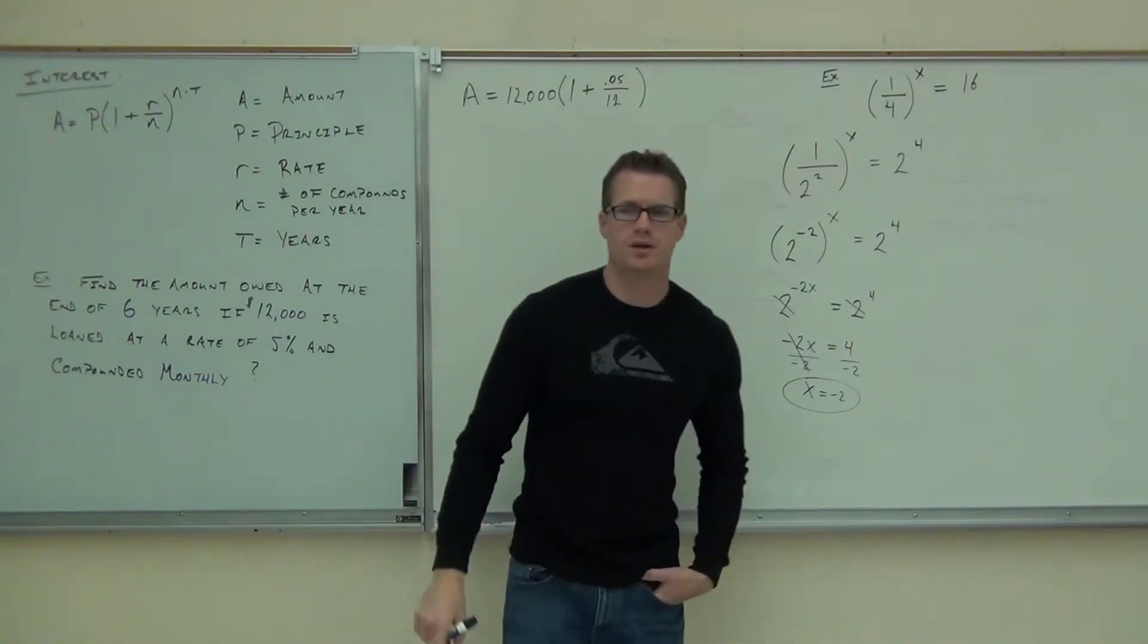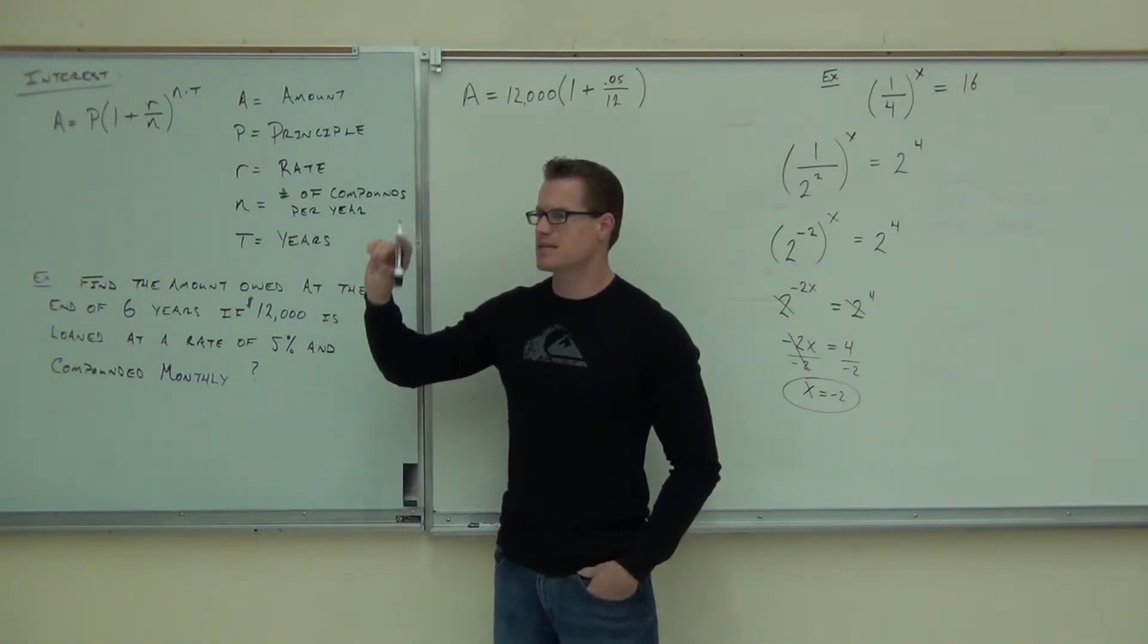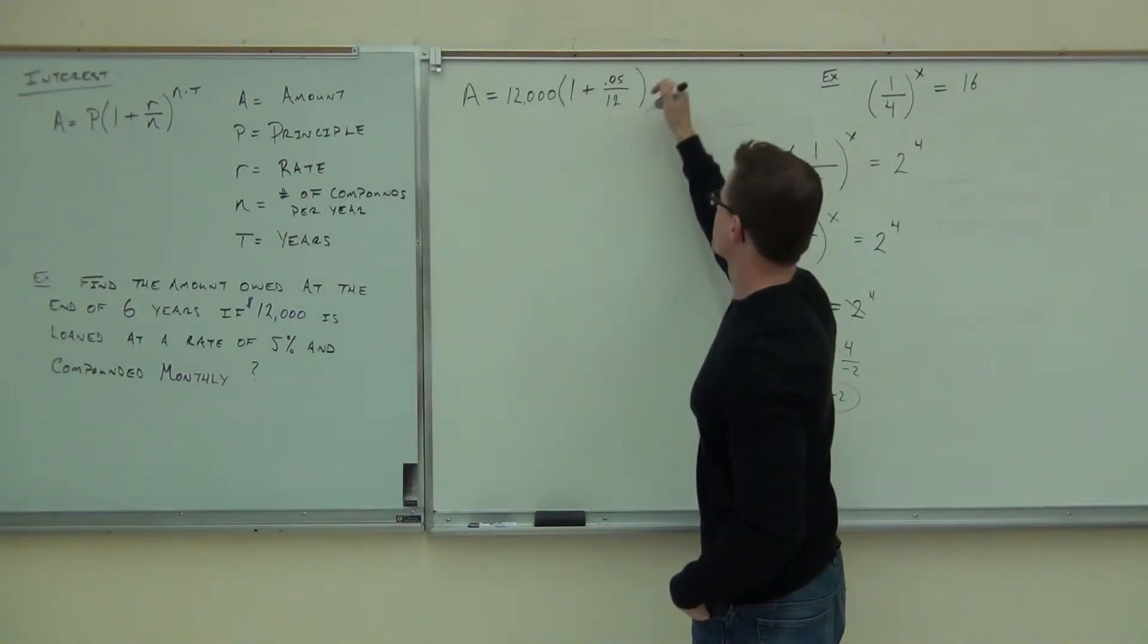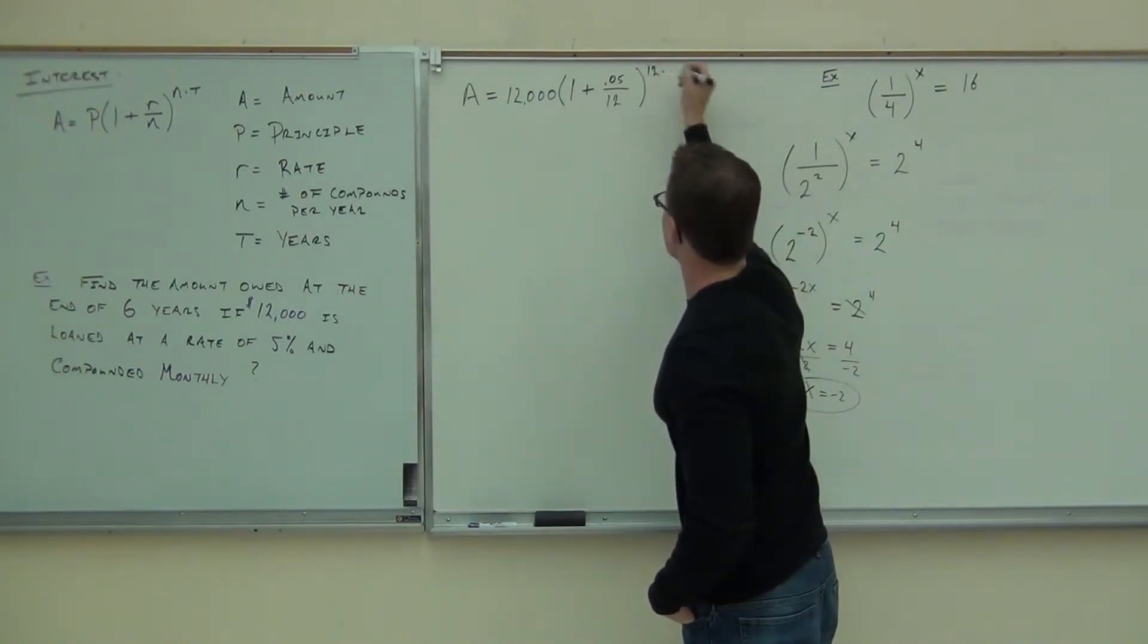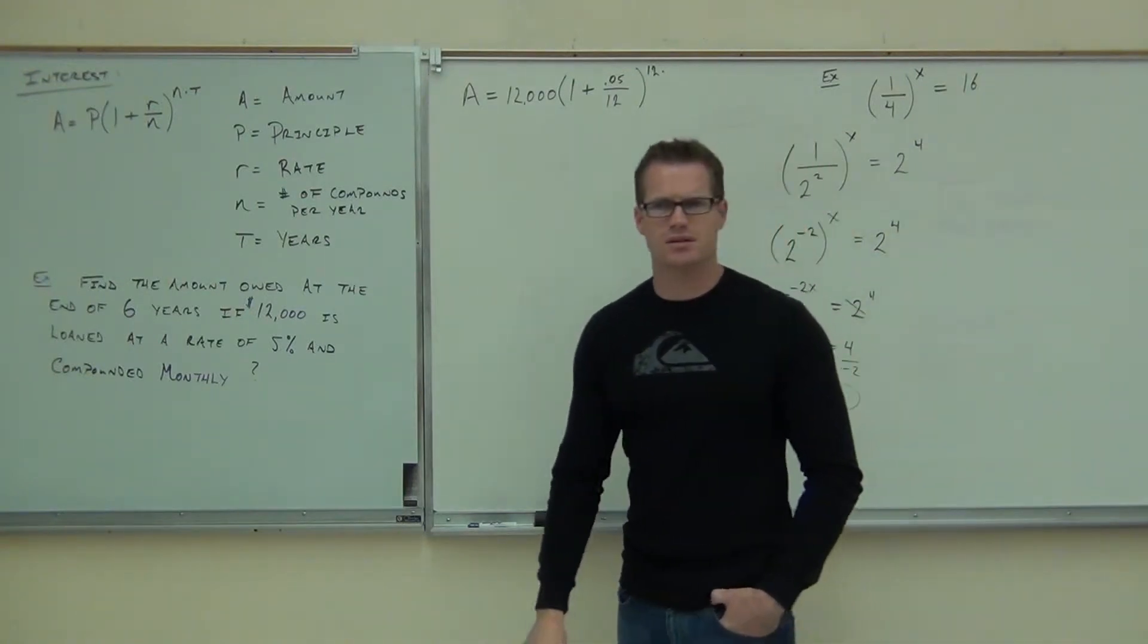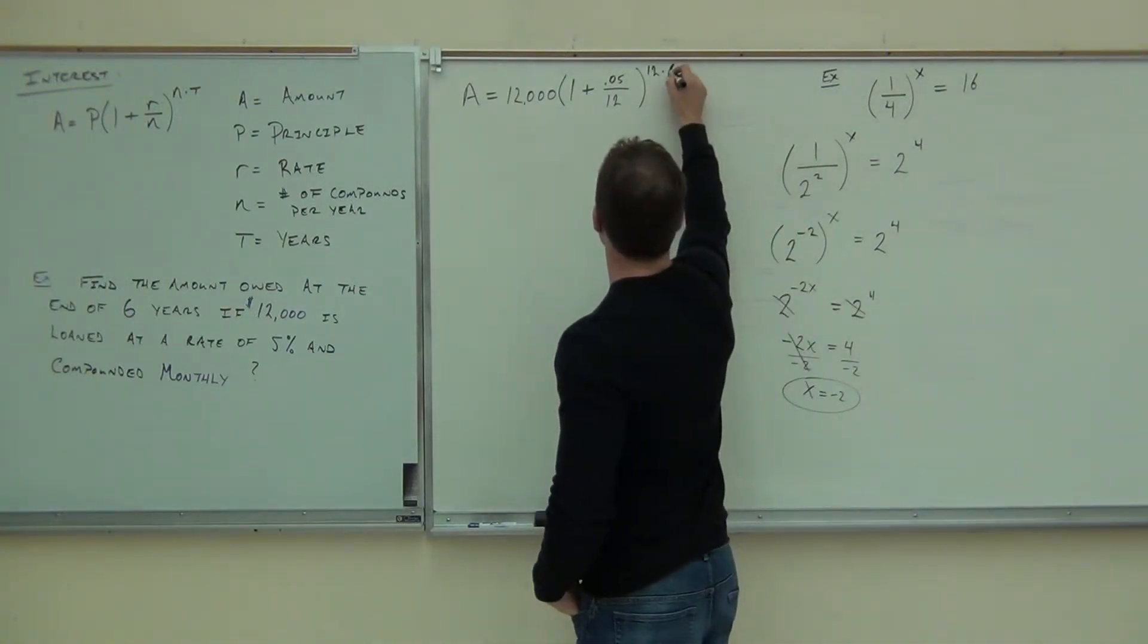Also, notice that your exponent is N times T. So you're using that number twice. If you have 12 here, you're also going to have 12 here. That's your N times T. What's your T in this case? Six years.